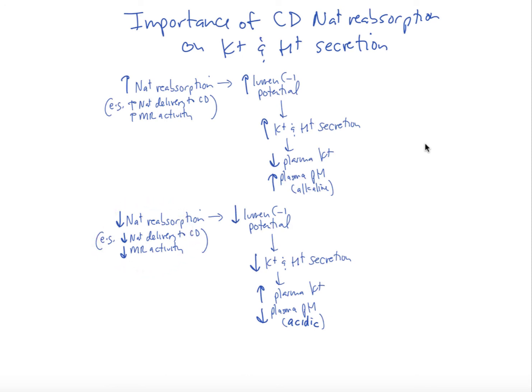The opposite is true if you decrease reabsorption through ENaC. Either there's less sodium delivery to the collecting duct, or if there's decreased mineralocorticoid receptor activity, this could be because there's less aldosterone. There's less aldosterone because you're not making it from the adrenal cortex, for example, or you block the receptor. Those would just be examples of reducing sodium reabsorption. In that case, you have less negative charge buildup, less secretion, and you have an increase in plasma potassium and an acidic arterial or plasma pH because you are not getting rid of protons and not reabsorbing bicarbonate.